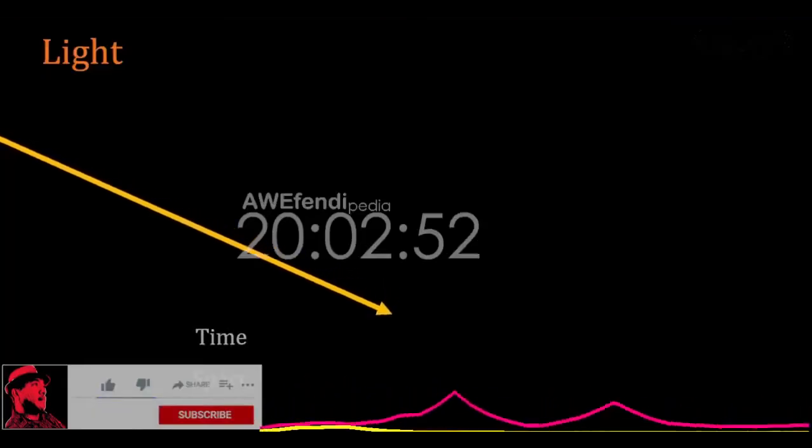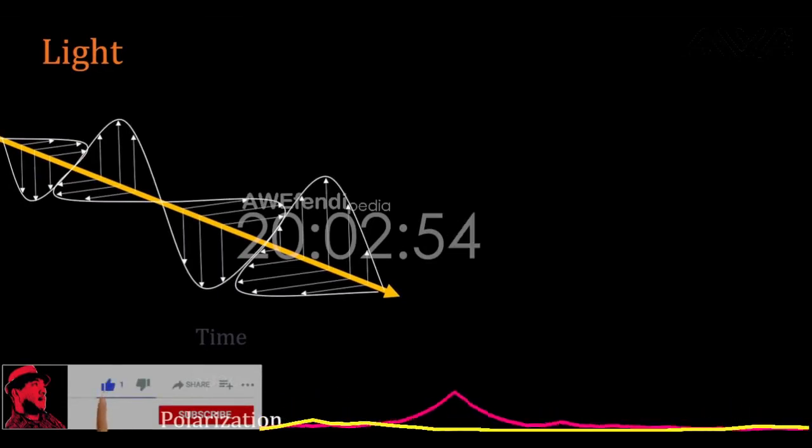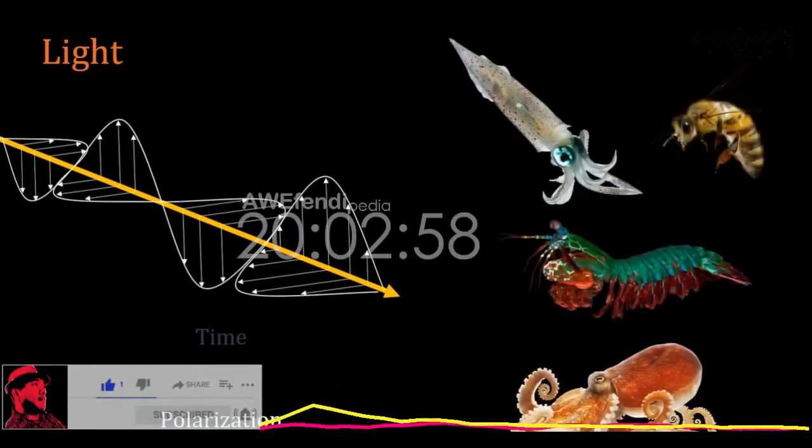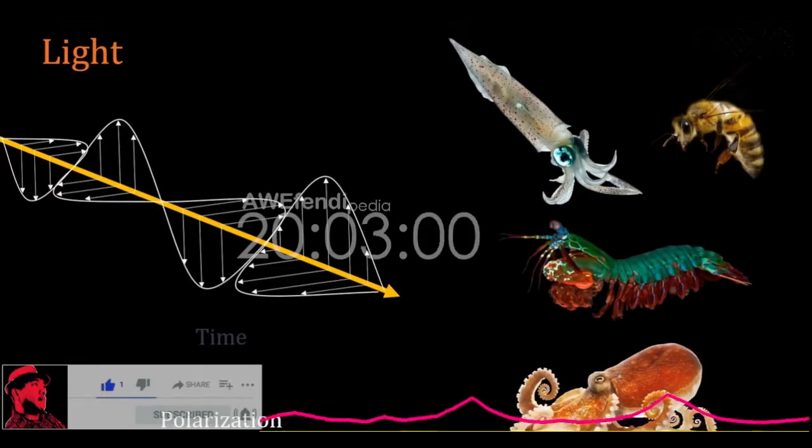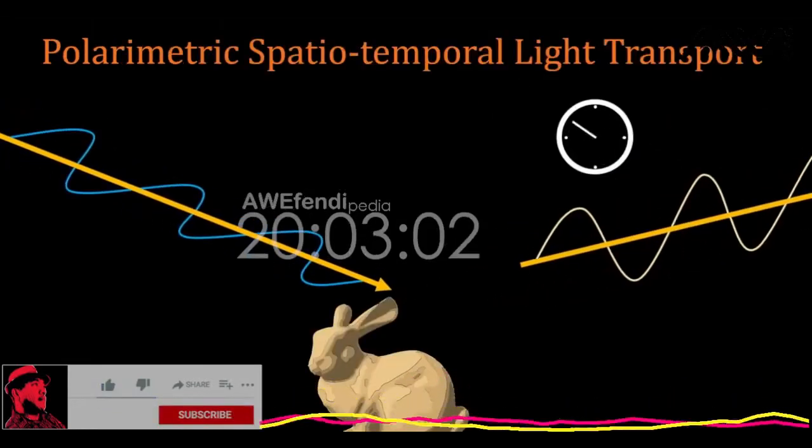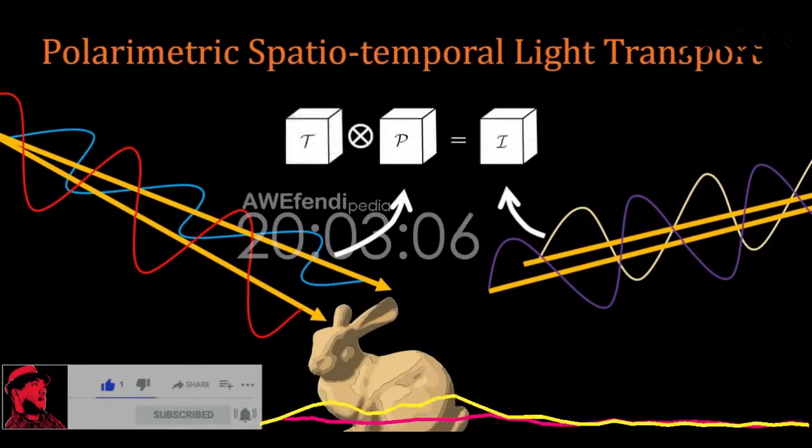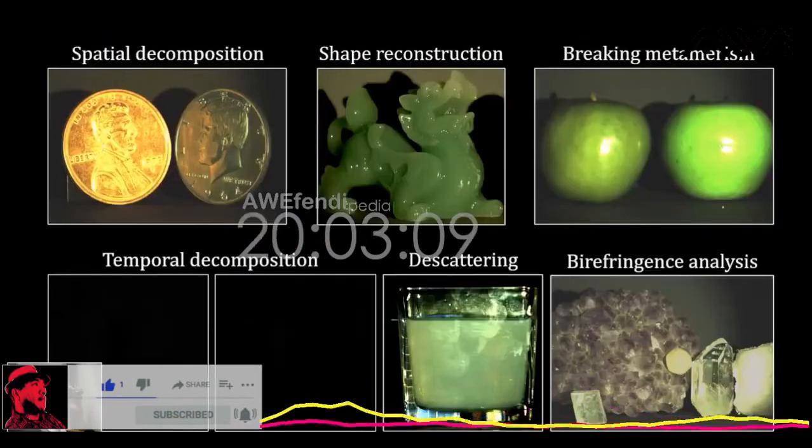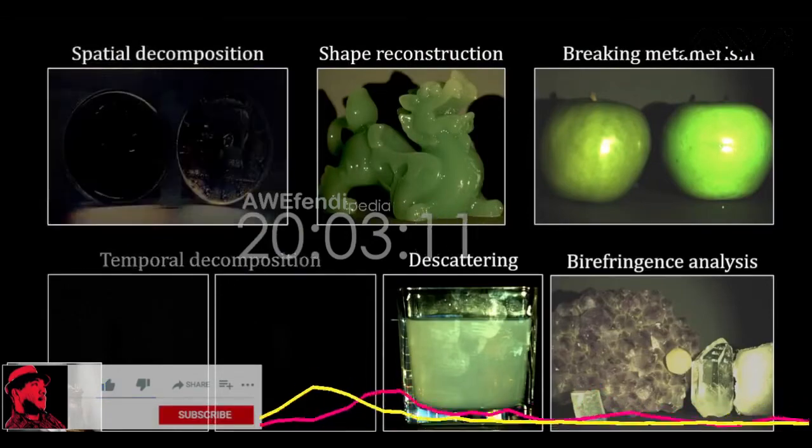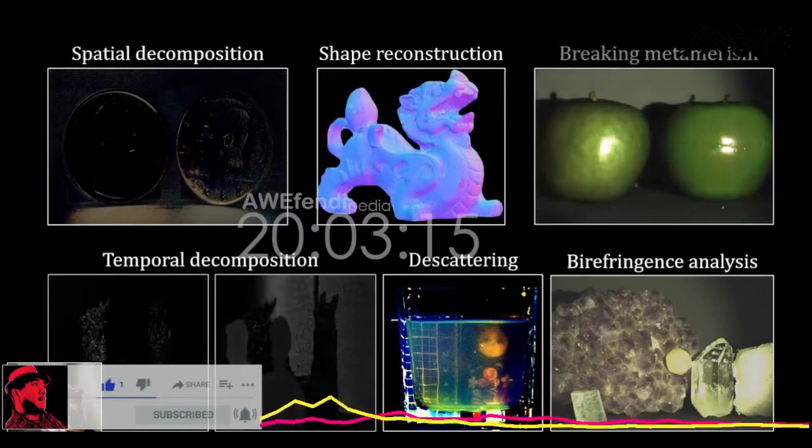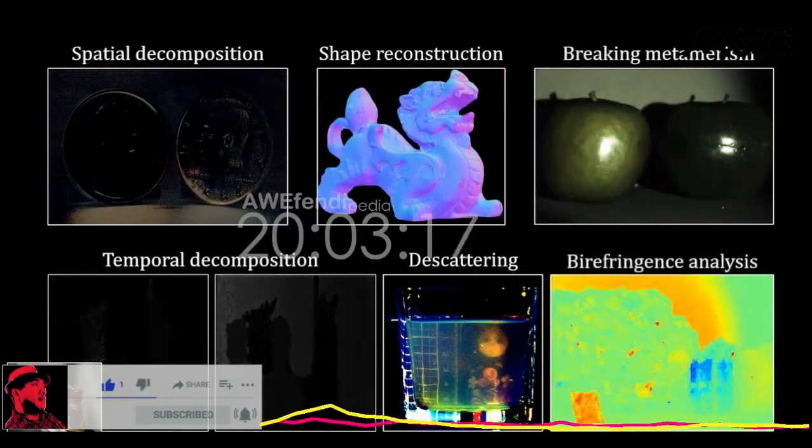Light has temporal, spatial, and polarimetric properties. While polarization has often been ignored in graphics, animal vision systems have made great use of it. We analyze how light polarization changes with space and time based on our novel seven-dimensional tensor model of light transport. This enables applications such as spatial and temporal decomposition, shape reconstruction, de-scattering, breaking metamerism, and birefringent analysis.